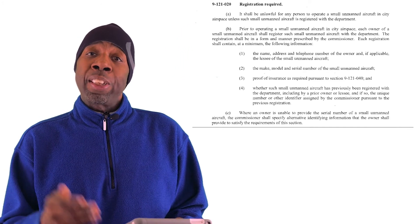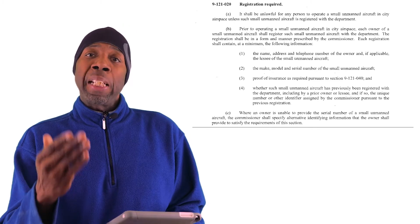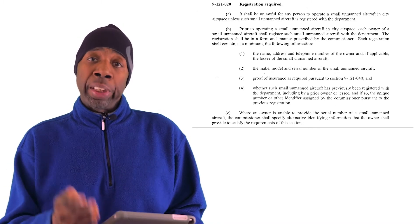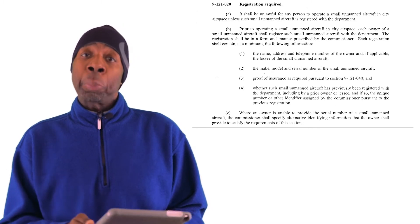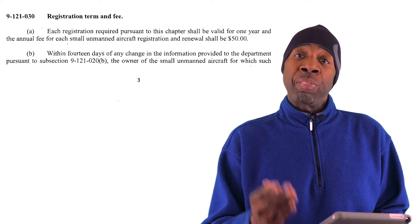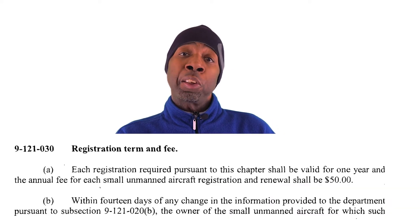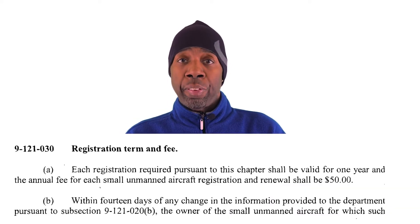Let's get into it. First, you must register. Simply put, it's illegal to fly a drone or UAS in Chicago if it is not registered. The required registration info is: name, address, and phone number of the UAS owner; make, model, and serial number of the UAS or drone; as well as proof of insurance. The cost of registration is $50 and it will be valid for one year. The renewal fee is also $50 for each year thereafter.